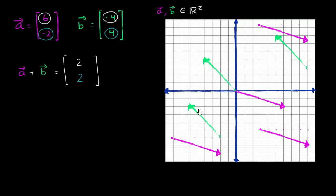So how does the way I drew vector a and b match with what their sum is? Let me draw the sum in blue. The sum, based on the definition of vector addition we just used, would be two, two. So it would look like this. How does this make sense — that this purple vector plus this green vector is somehow going to be equal to this blue vector? I encourage you to pause the video and think about whether that even makes sense.